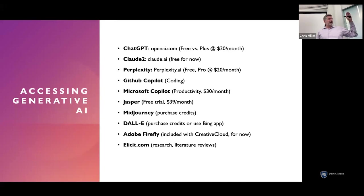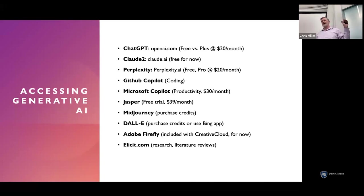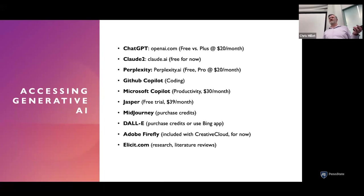Claude 2 was developed by folks who splintered off from OpenAI. It's a really great model. Interestingly, that company adopted something called Constitutional AI, which incorporates human values into the model as a safety mechanism — a way to ensure the generative AI provides responses aligned with things like avoiding harmful bias and other safety-related concerns.